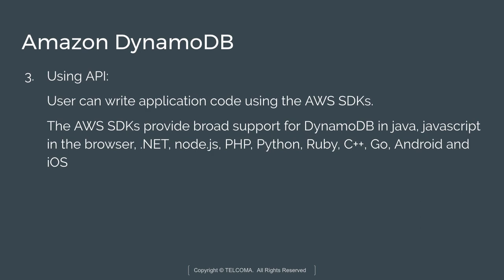Using the API, you can write application code with AWS Software Development Kits (SDKs) supporting languages such as Java, JavaScript (in the browser), .NET, Node.js, PHP, Python, Ruby, Android, iOS, and more. This is how to set up Amazon DynamoDB. Thank you so much.